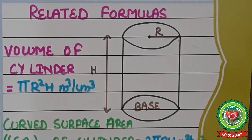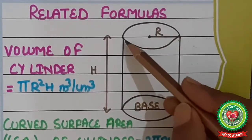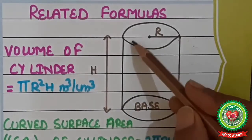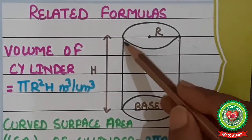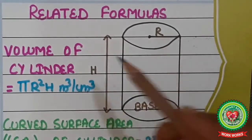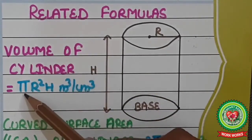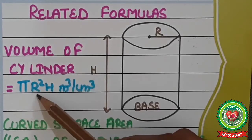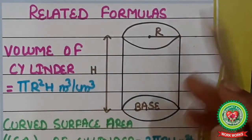First, we will do the concept of cylinder and its formulas. This is the shape of the cylinder — it has a curved surface plus two circles on the top and bottom. The formula for the volume of a cylinder is π r² h, in units of meter cube or centimeter cube.